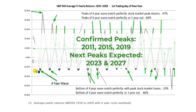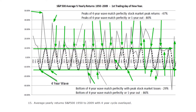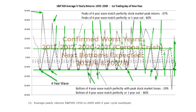So the four-year cycle troughs — how accurate were they? At the bottom of the wave, the four-year cycle predicted maximum market losses correctly only 29% of the time. However, the S&P 500 made losses either in the exact year of the cycle bottom or the following year 86% of the time.